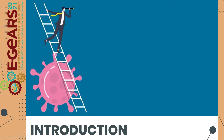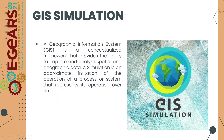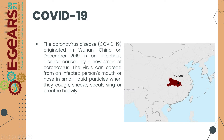Introduction. A GIS simulation is an approximate imitation of the operation of a process or system that represents its operation over time. COVID-19 originated in Wuhan, China in 2019.